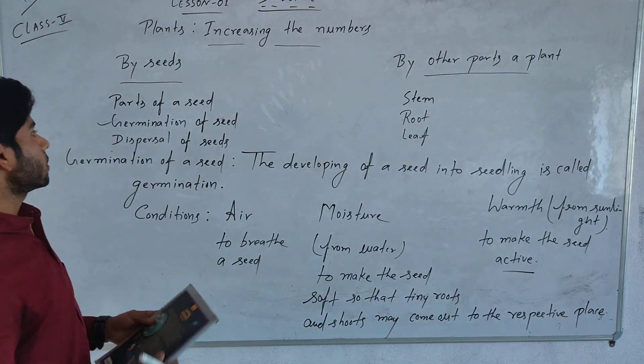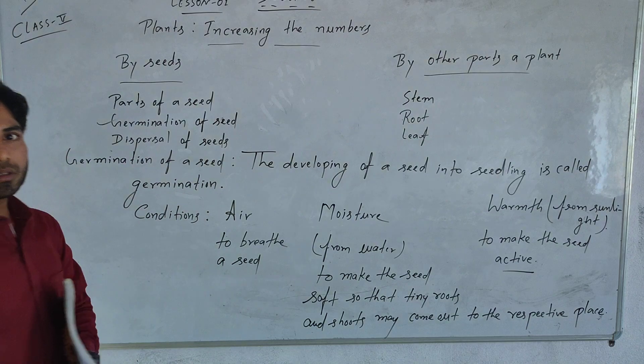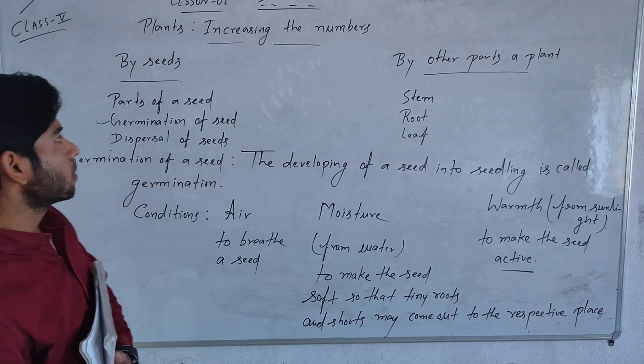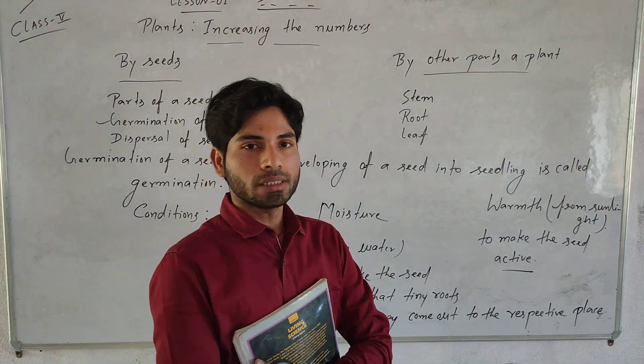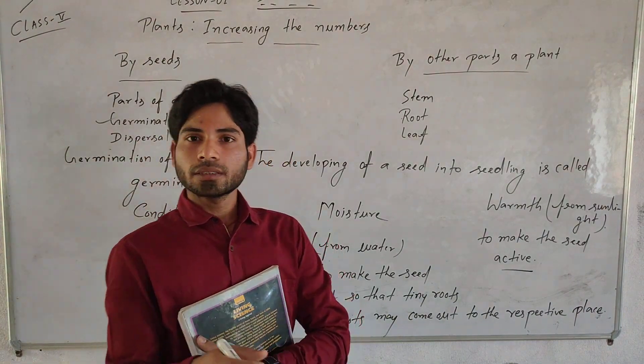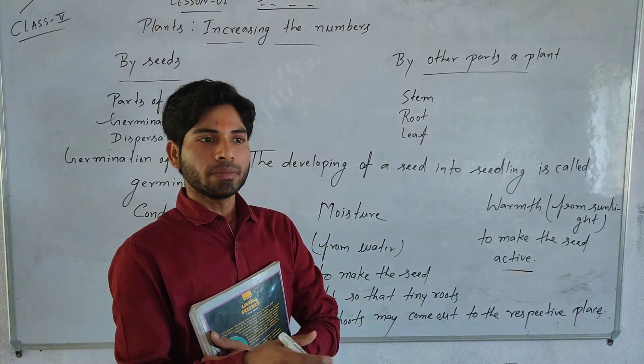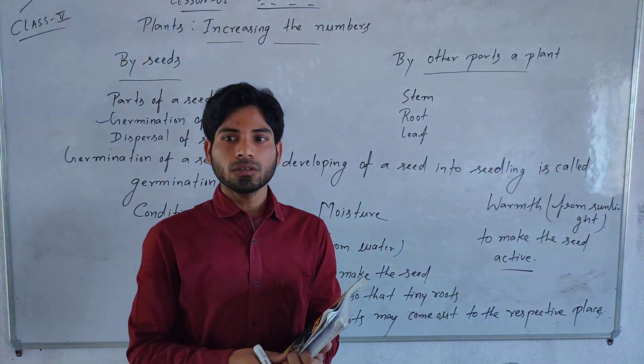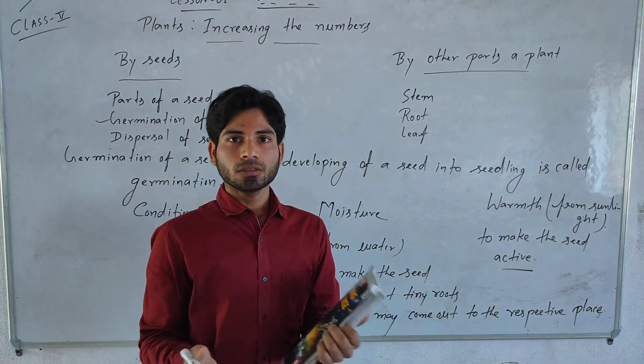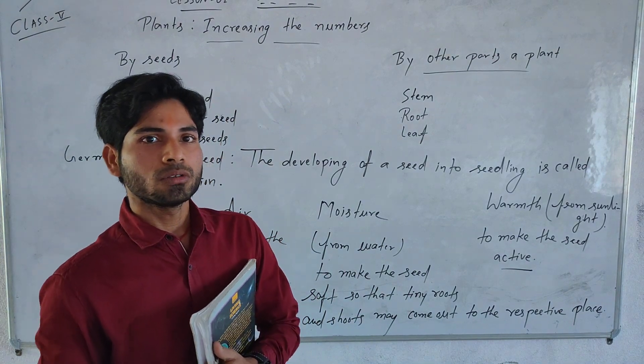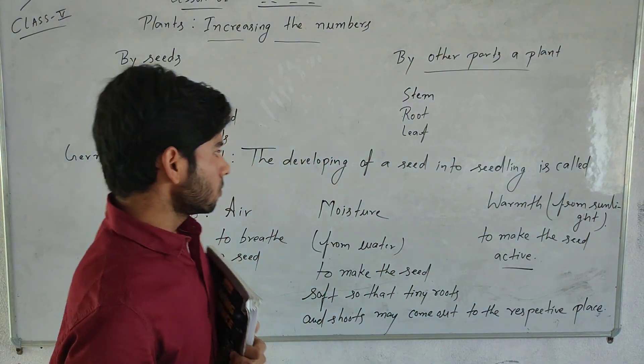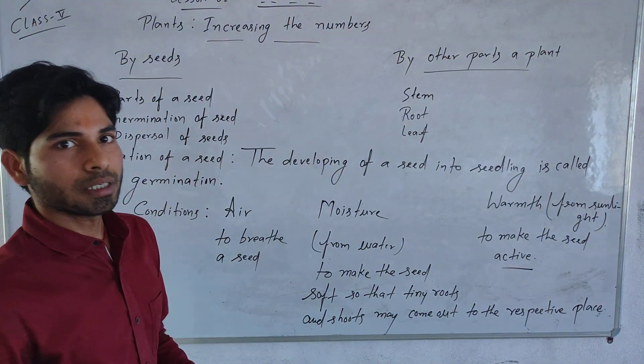And next topic is dispersal of the seed. If we talk about dispersal, if a plant produces many seeds and it takes place from one place, then many plants may grow at a single place and does not provide the favorable conditions to all the plants at a particular one place. So here dispersal is very important.